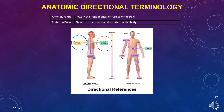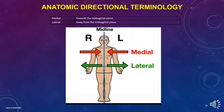Anterior and ventral means toward the front or anterior surface of the body. Posterior and dorsal means toward the back or posterior surface of the body. Medial means toward the mid-sagittal plane. Lateral means away from the mid-sagittal plane.